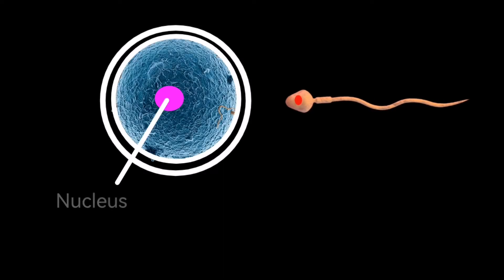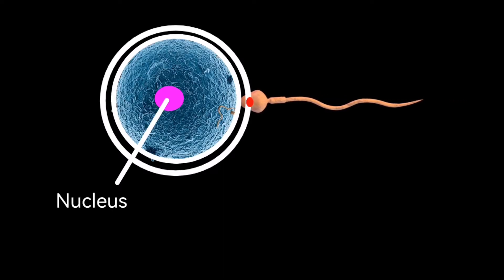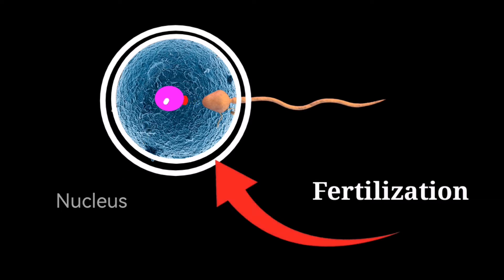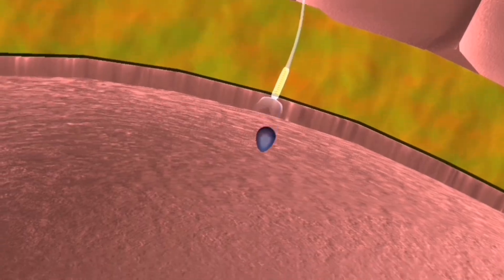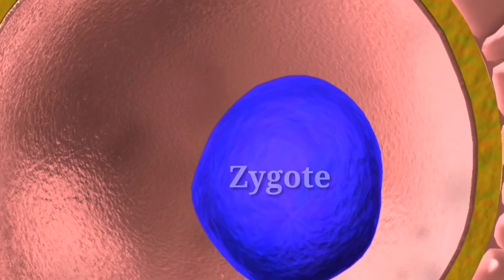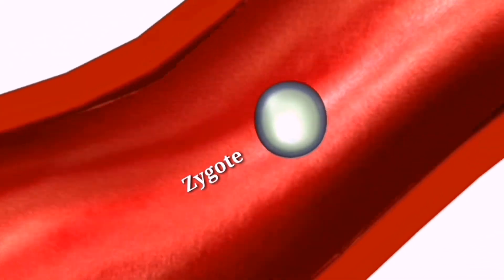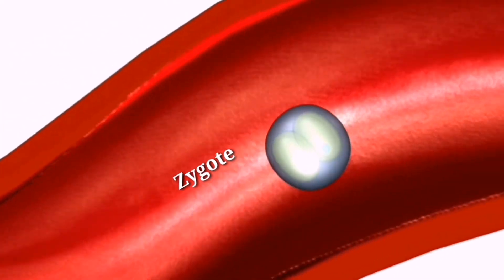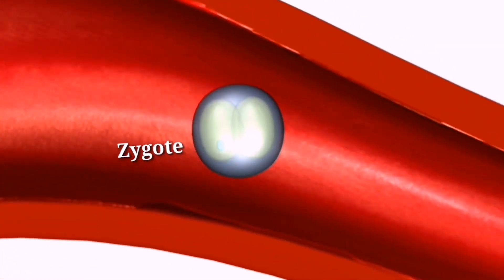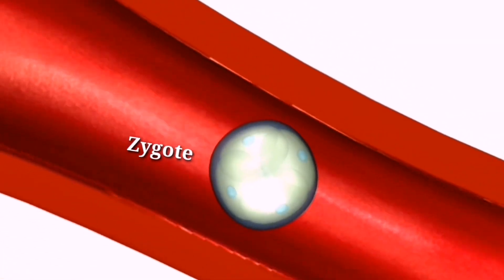When a sperm cell finally reaches the egg, it penetrates the egg's outer layer and the two cells merge together. This process is called fertilization, and it typically occurs in the fallopian tube. The fertilized egg is now called a zygote.